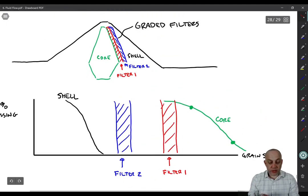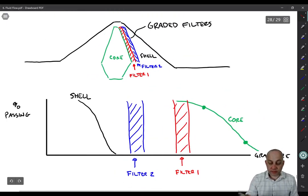And this grain size distribution curve is showing that. So here's the core, way out here on the fine-grained side. Maybe this is all clay and silt. So grain size is decreasing as you move from left to right here in accordance with the American convention.